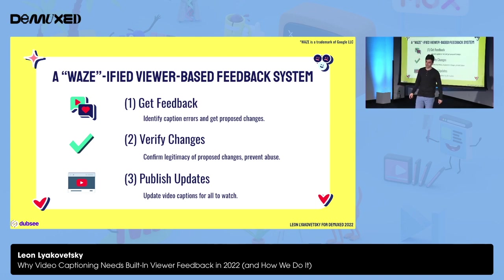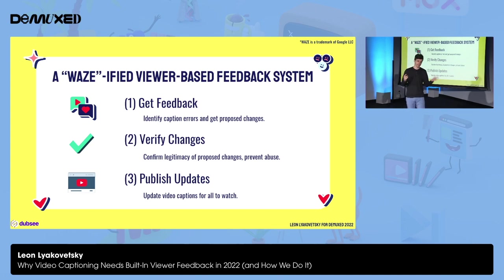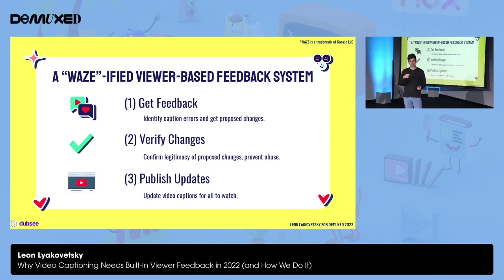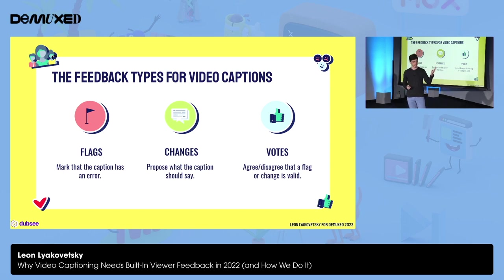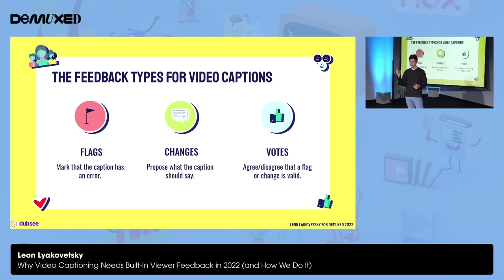I think we can do the same thing in video captions. We need a Waze-ified style viewer feedback system where we identify caption errors and get proposed changes from viewers. Then, understanding this is a crowdsourced system, we verify those changes to see if they're correct and to prevent abuse. Finally, we need a mechanism that publishes those changes and updates those captions for everyone. The types of feedback in the system are flags, changes, and votes. A flag marks that the caption has an error. A change proposes what the caption should actually say. And votes are where viewers agree or disagree that a flag or a change is valid.